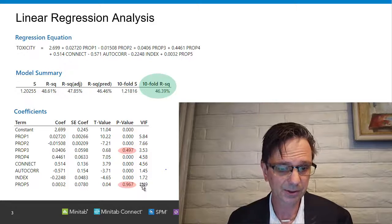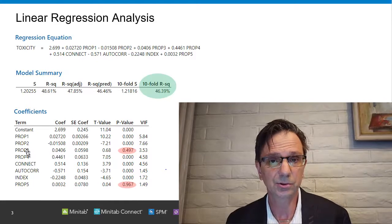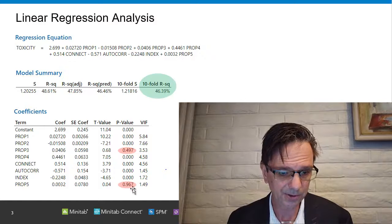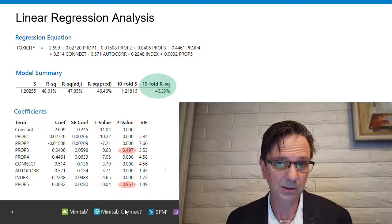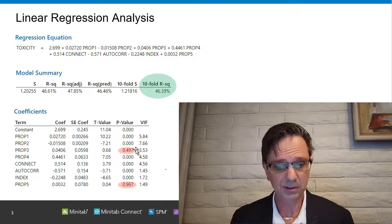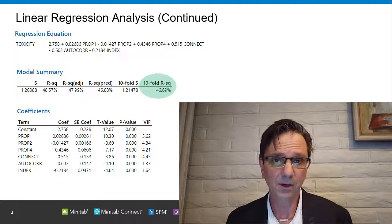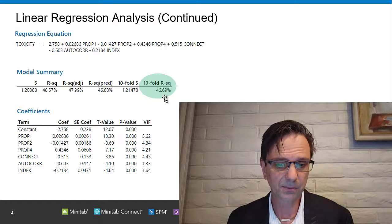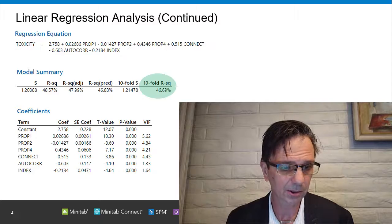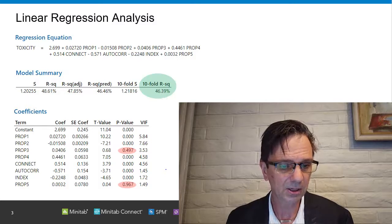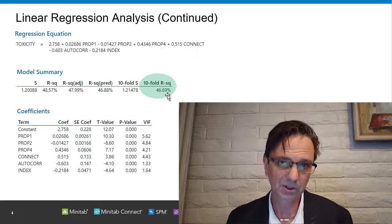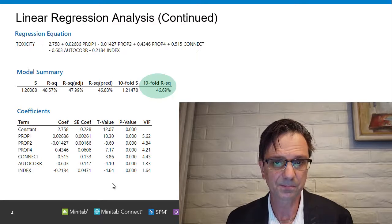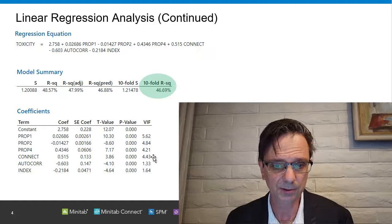Now classical linear regression analysis also identified two out of eight features, property three and property five, that are shown as being highly insignificant. So if I follow the general guidelines and drop those two, I can get a revised linear regression equation that uses only six input properties. And now my cross-validated R-squared went a little bit higher, from 46.39 to 46.69, and all of these six inputs are statistically significant. Now the big question is, what do we do with this now? Where do we go from here?